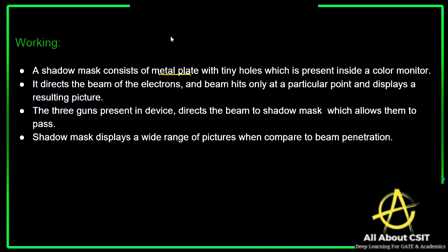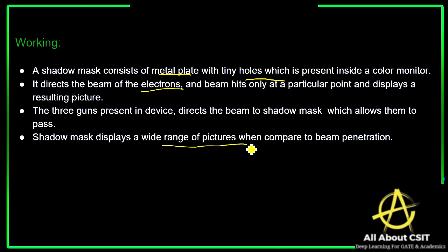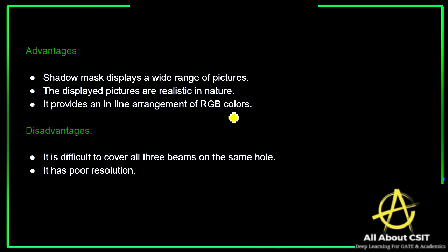The working principle of the shadow mask technique: a shadow mask consists of a metal plate with tiny holes present inside the color monitor. It directs the beam of electrons from three electron guns, which hit only at a particular point to display the resulting picture. The three guns direct the beam to the shadow mask, which allows them to pass through and displays a wide range of pictures compared to beam penetration.